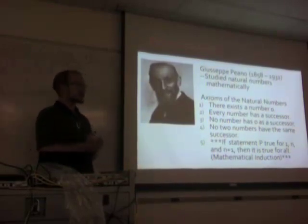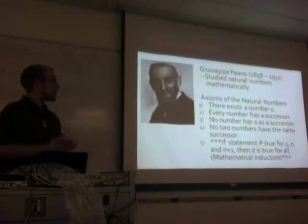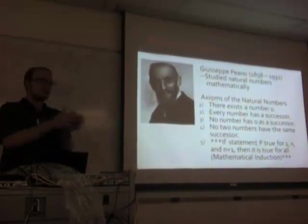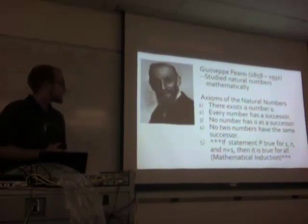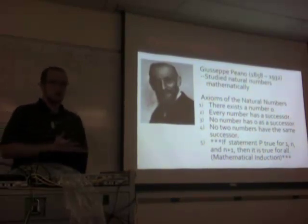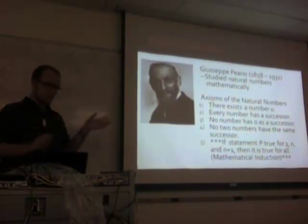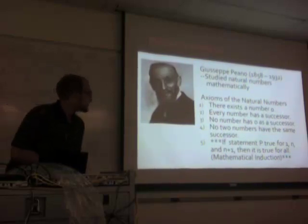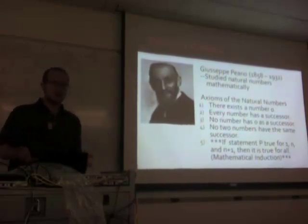His axioms of the natural numbers are as follows. First: there exists a number and we call it zero. Every number has a successor — two's successor is three, five's successor is six. The next one is that zero has no predecessor; no number will have a successor of zero, since we're not thinking of negative numbers here. Also, no two numbers have the same successor — the successor of three is not the successor of seven, and so on.